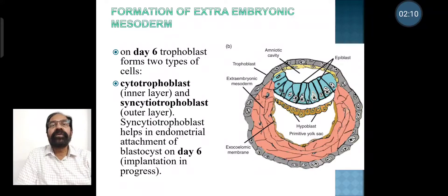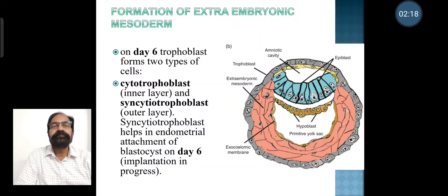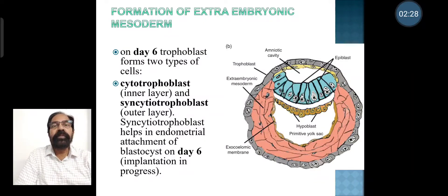On day 6, the trophoblast forms two types of cells: cytotrophoblast, the inner layer, and syncytiotrophoblast, the outer layer. The syncytiotrophoblast helps in endometrial attachment of the blastocyst on day 6, that is implantation in progress.